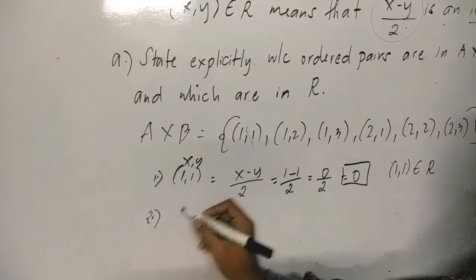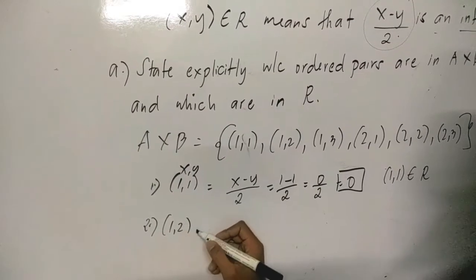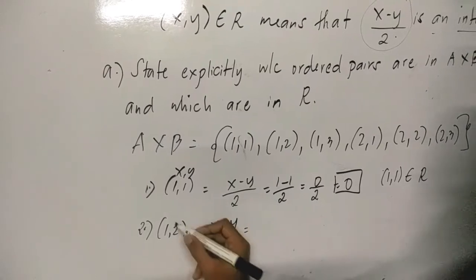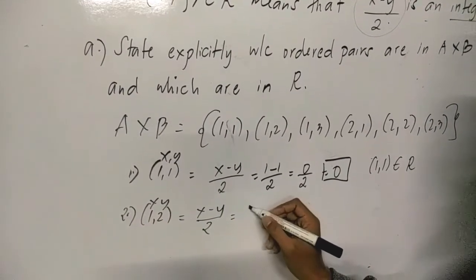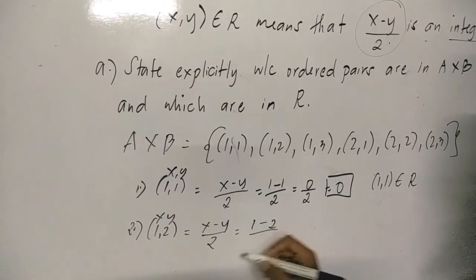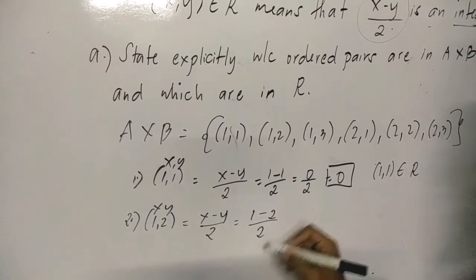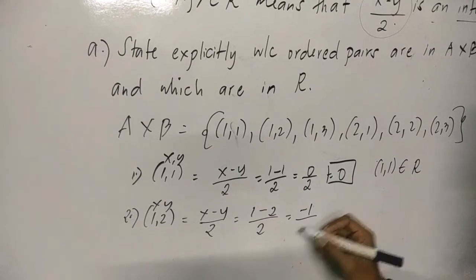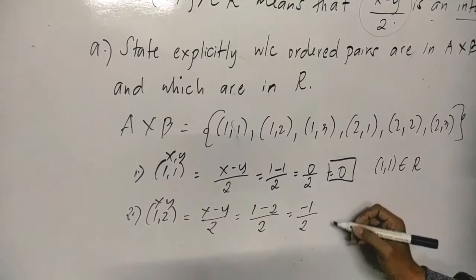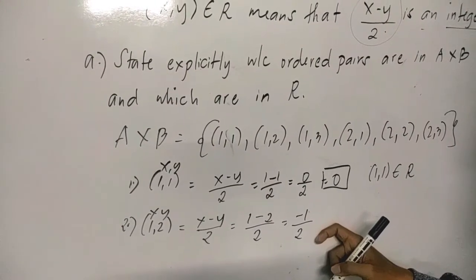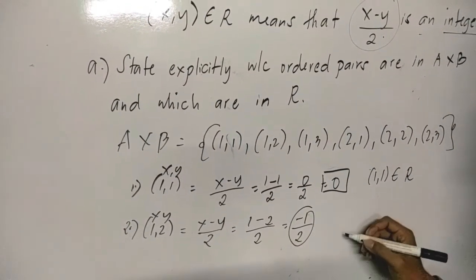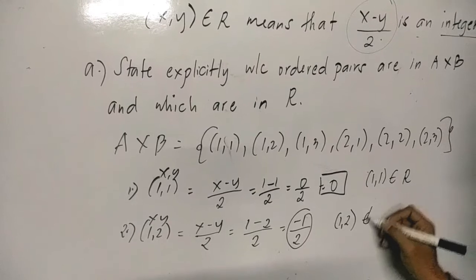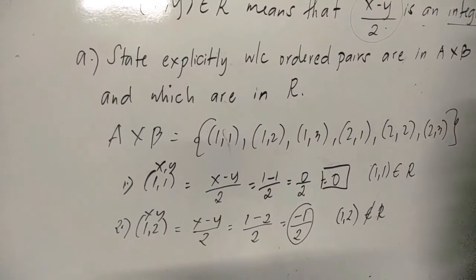Number 2: We have (1,2). Again, (x - y)/2. Substituting the values: x is 1, y is 2. We have (1 - 2)/2 = -1/2. Exactly, negative 1 over 2. So is it an integer? No, it's not an integer. Therefore (1,2) is not an element of R. Not related.